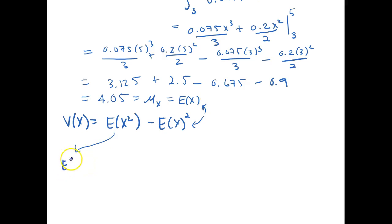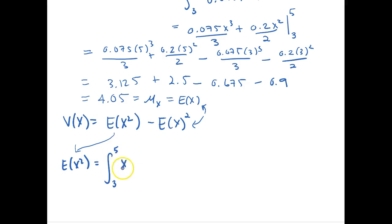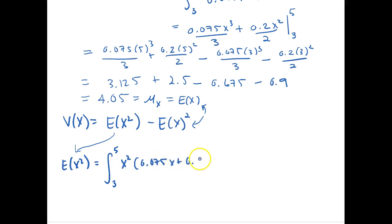The expectation of x squared is the integration again over the sample space. All we do is multiply our PDF by x squared: x squared times 0.075x plus 0.2 dx.